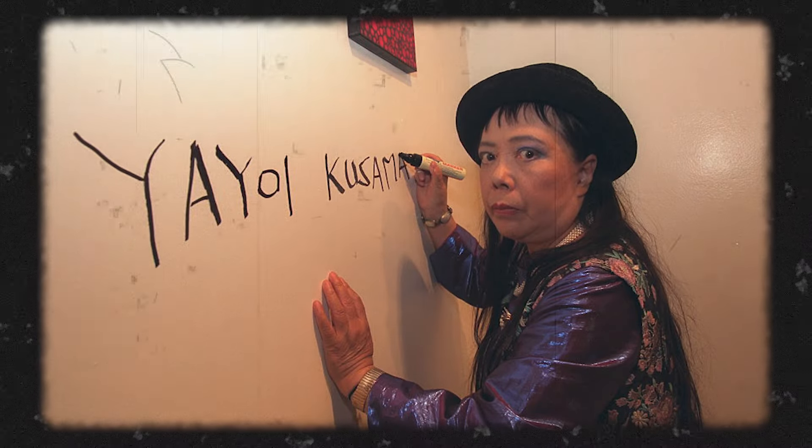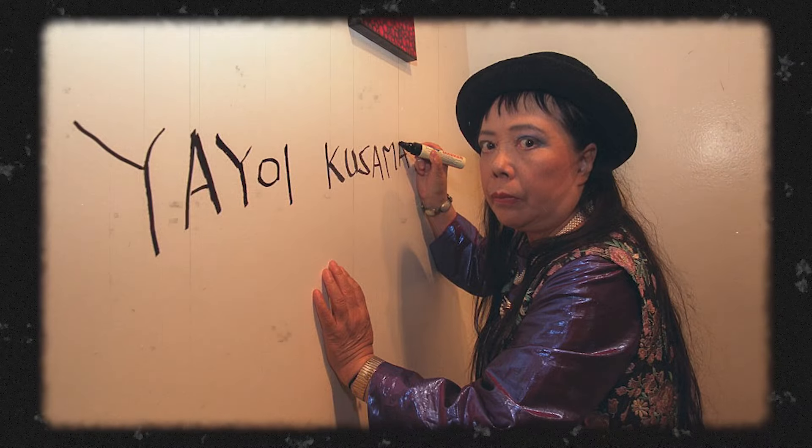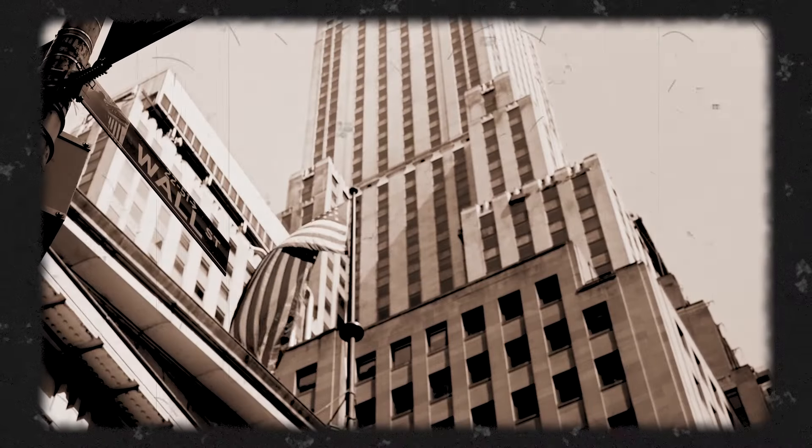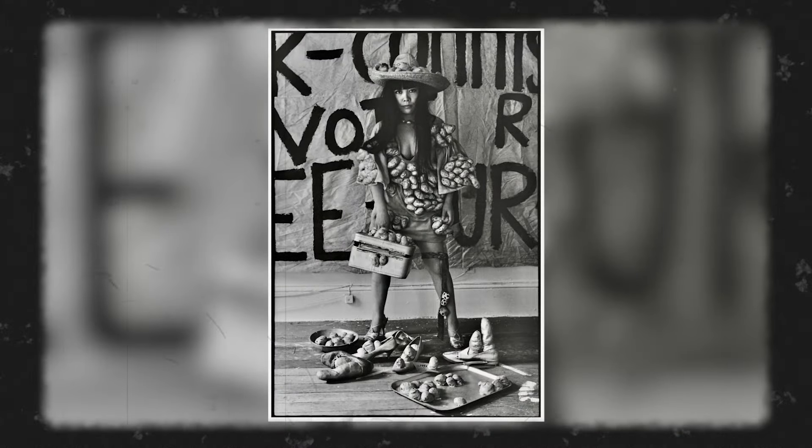Most people will know Yayoi Kusama for her polka dots, her pumpkins, or maybe her red wig. However, back in the 1960s she was wearing something different.